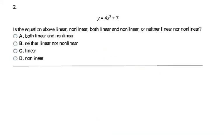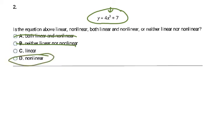In this next example, we're deciding if the equation is linear or nonlinear. Once again, you can automatically eliminate 'both' and 'neither.' This equation has an exponent of three — because that exponent is greater than one, it cannot be linear. So my answer here is nonlinear.